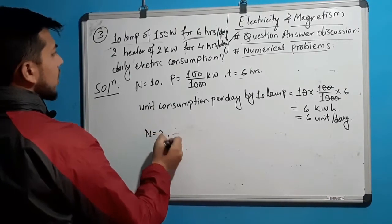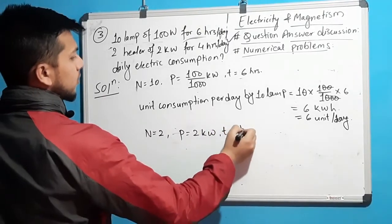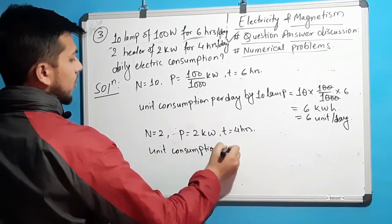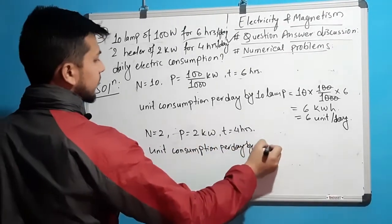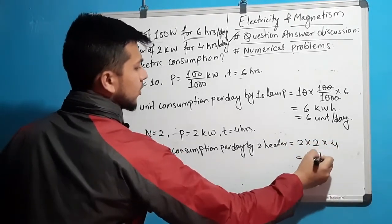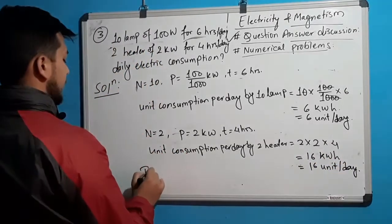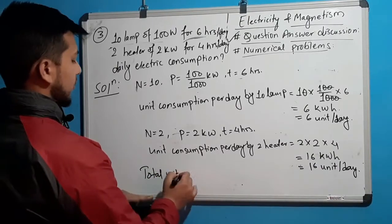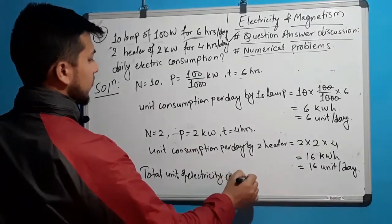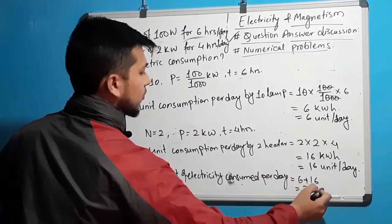For the next appliance: N equals 2 heaters, P equals 2 kilowatt (already in kilowatt, no conversion needed), and time T equals 4 hours. Unit consumption per day by 2 heaters equals 2 into 2 kilowatt into 4 hours equals 16 kilowatt-hours, that is 16 units per day. Total units consumed per day equals 6 plus 16 equals 22 units.